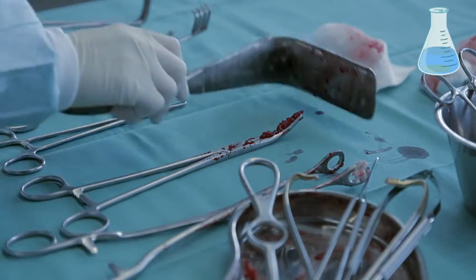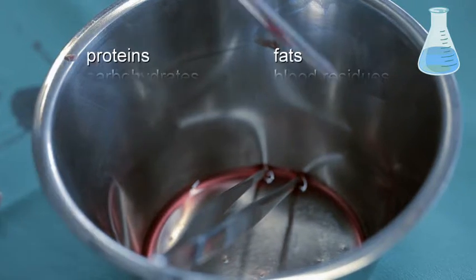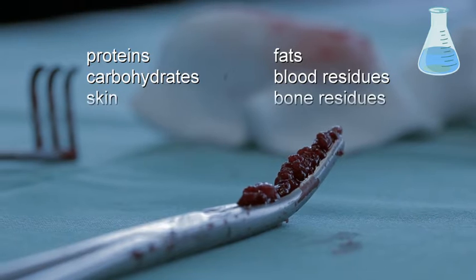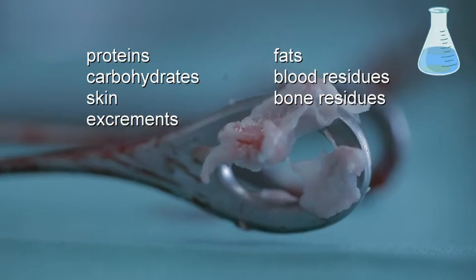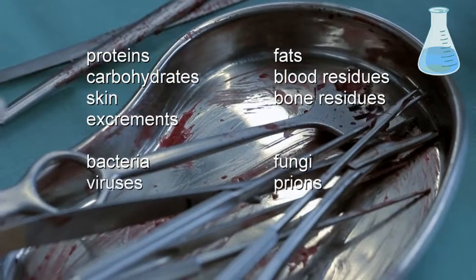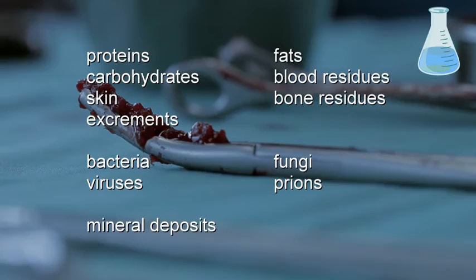The instruments can be contaminated in various ways. For instance, with proteins, fats, carbohydrates, blood, skin, bone residues, excrement, and microorganisms such as bacteria, fungi, viruses, or prions, or as depicted previously, possibly with mineral deposits as well.